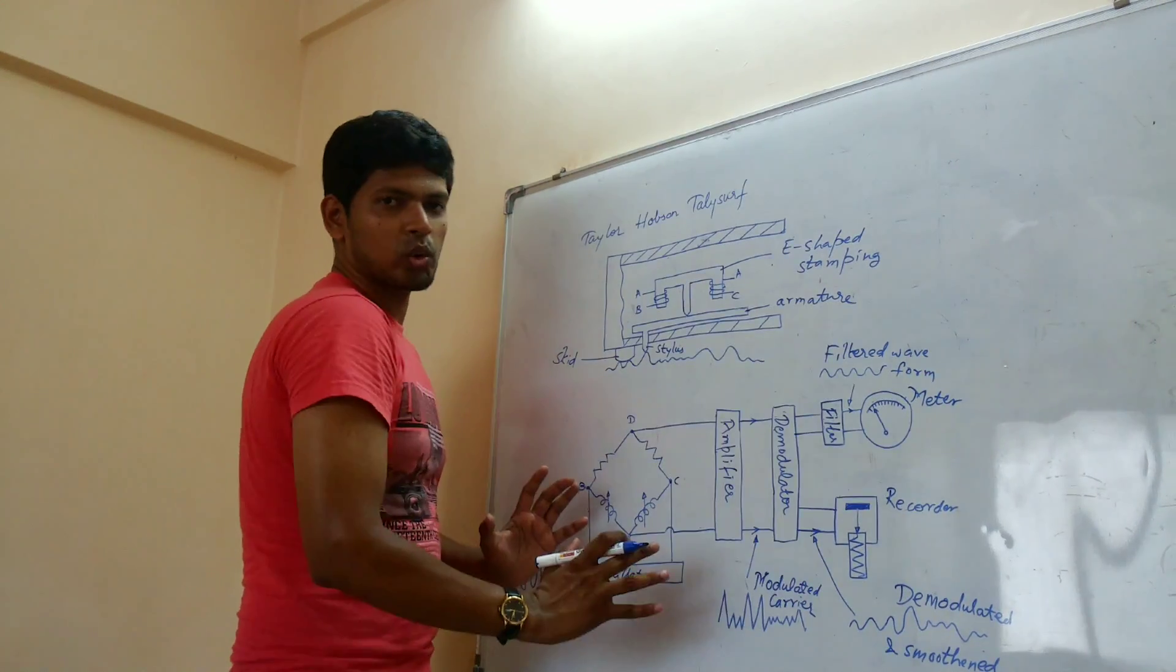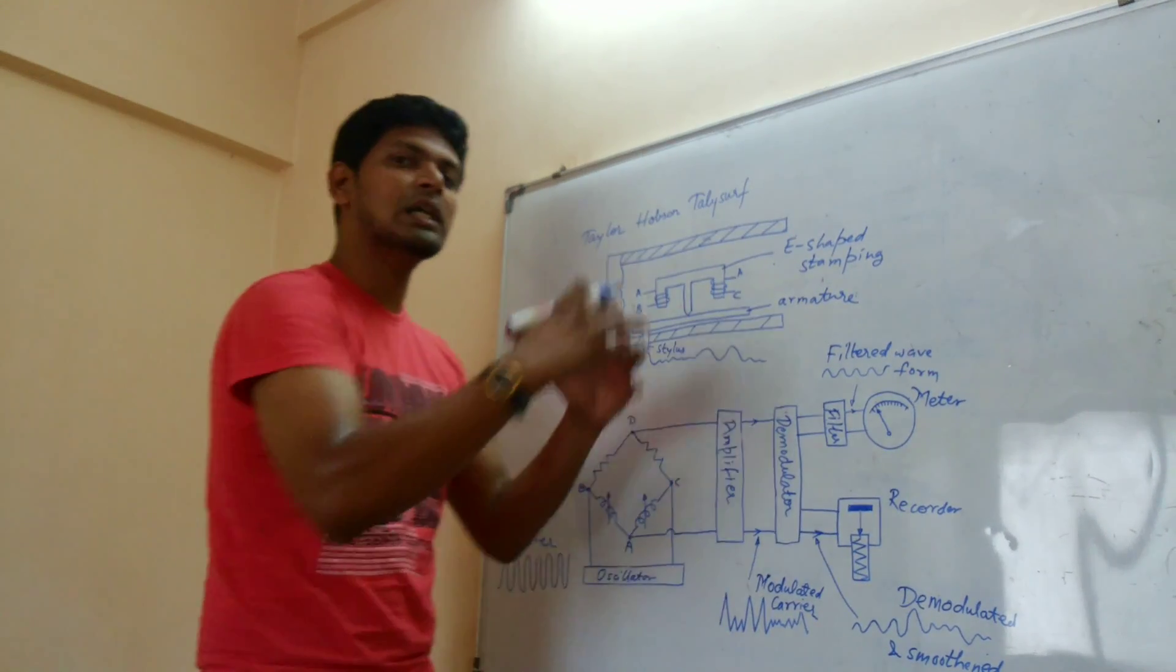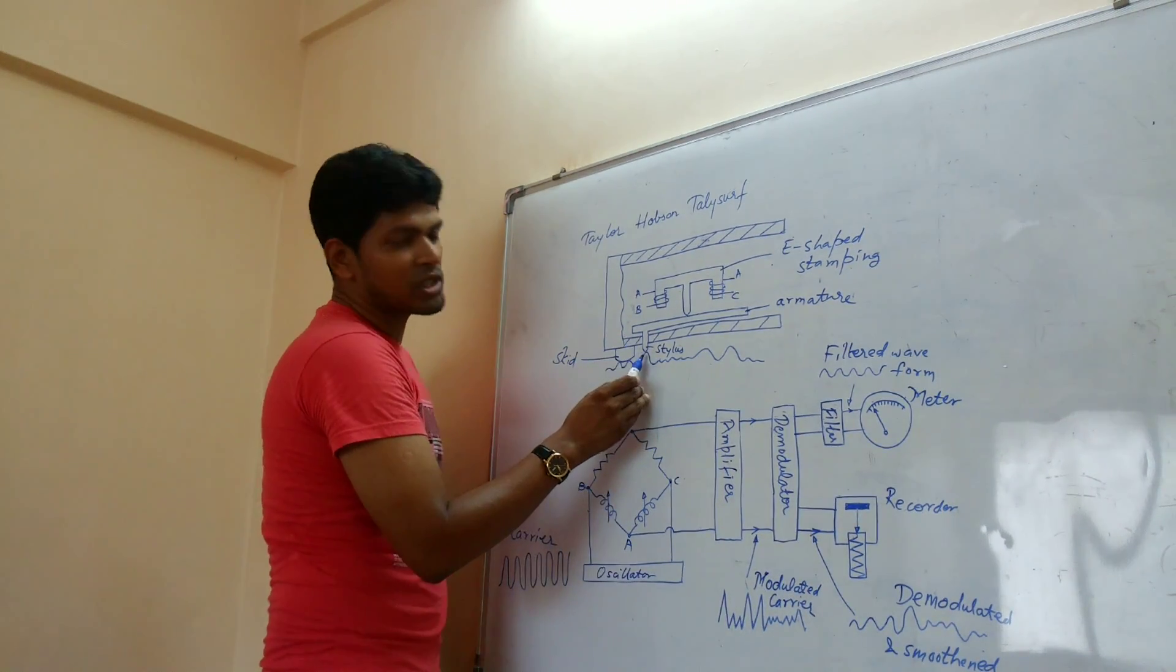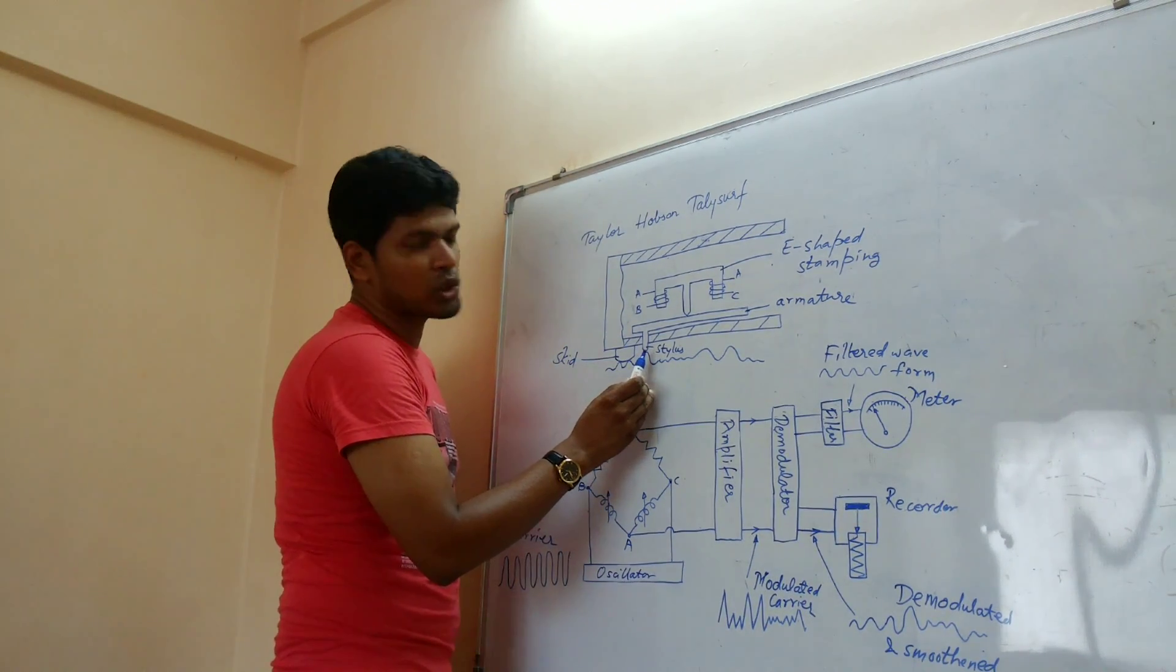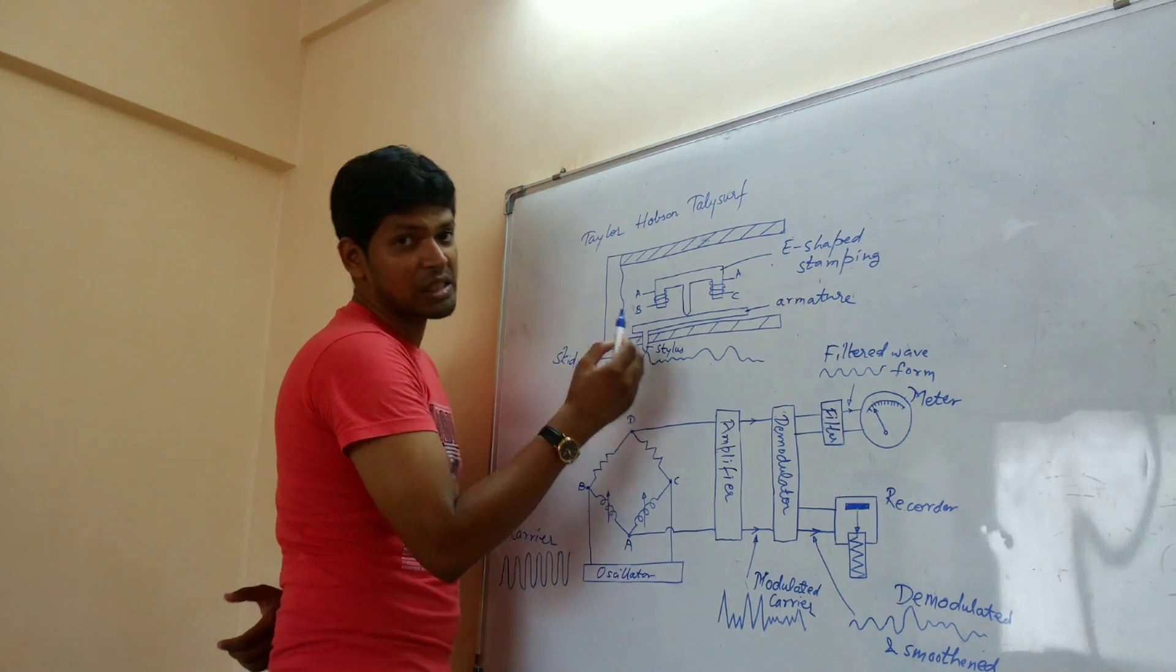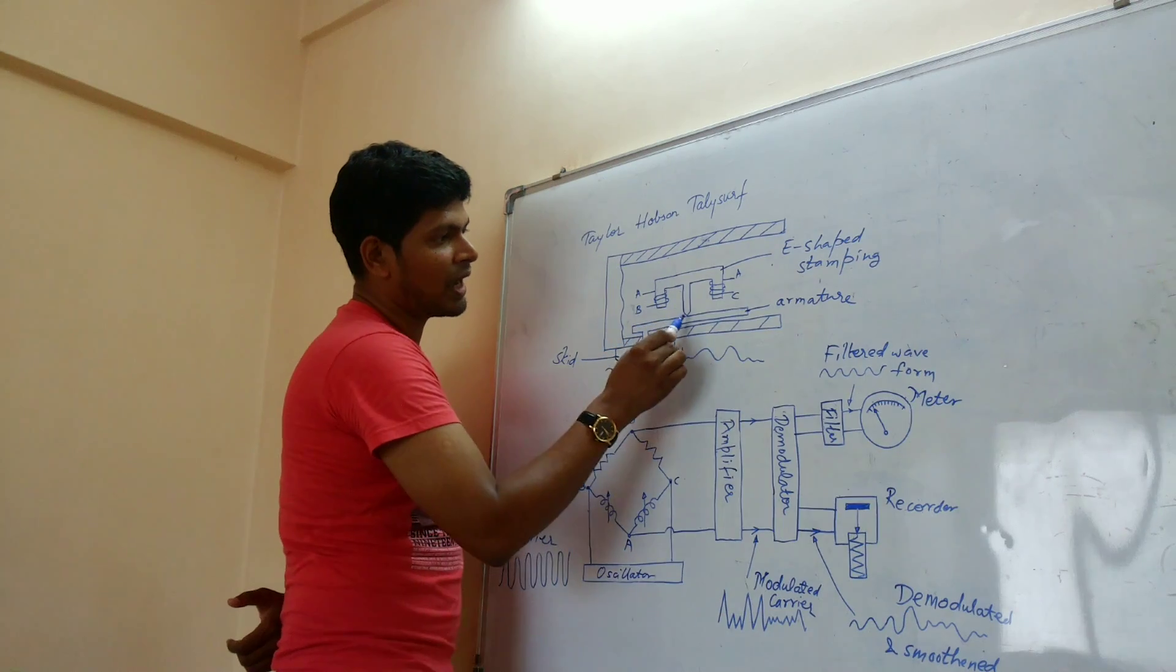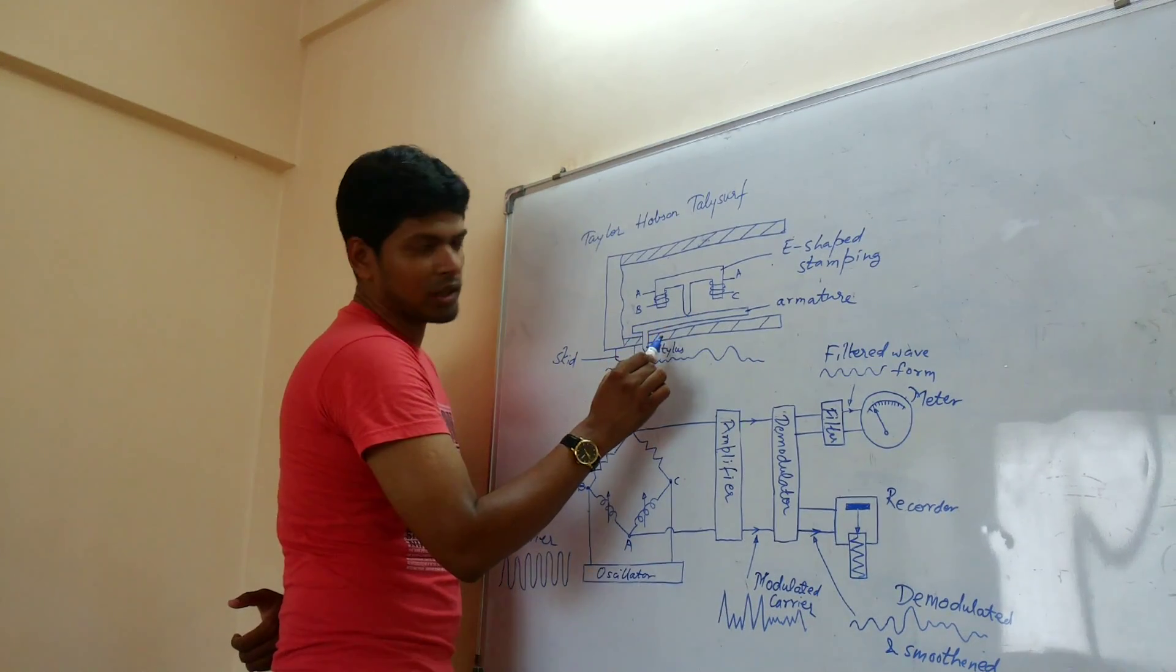So let us go through once again, considering the construction as well as the working. Stylus which is made up of diamond, 0.002 mm, that is the tip radius. It goes along the jaw with the skid. And the armature is pivoted.